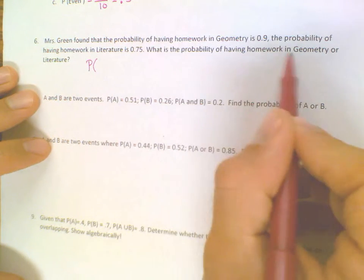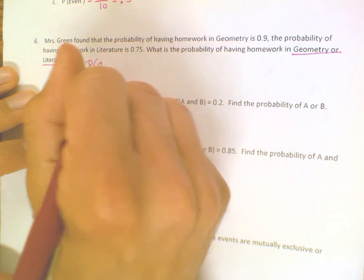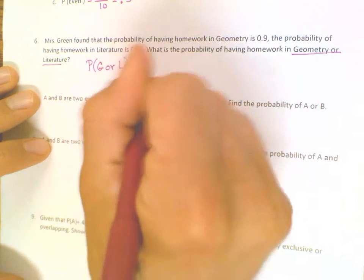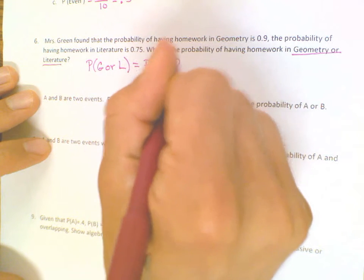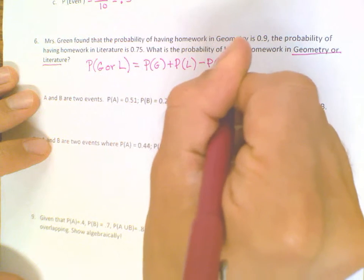So if you looked at the probability of having homework in geometry or literature, the probability of geometry or literature, then its formula would say probability of geometry plus the probability of literature minus the probability of geometry and literature.